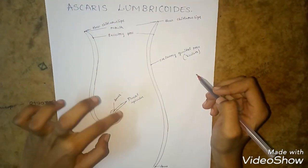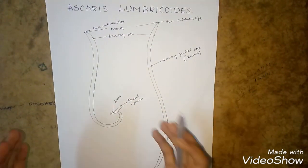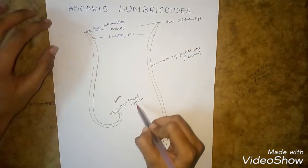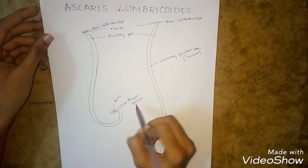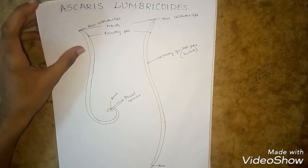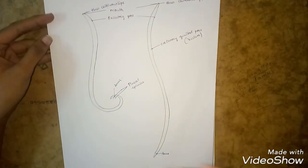In the male Ascaris, there are two spicules present at the posterior side, known as penial spicules, which serve to transfer sperm cells during copulation.